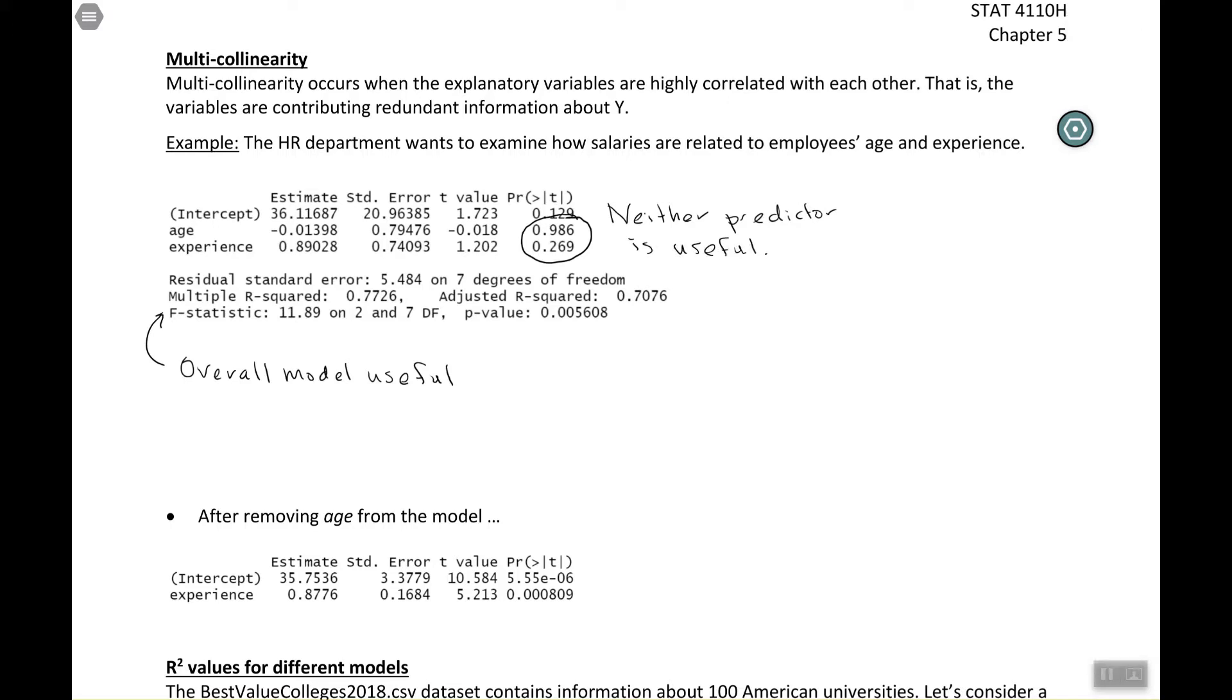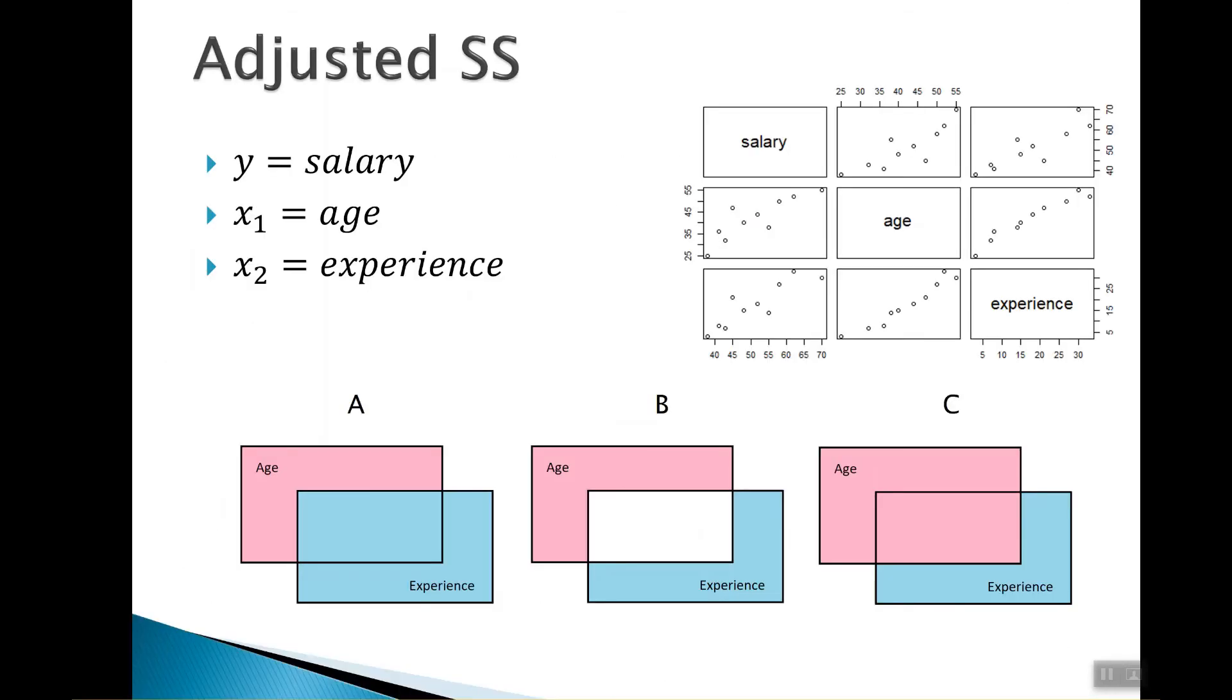So you may have thought of this, or you may have just sort of looked above and see what multicollinearity is about. But basically, this happens when you have variables that are contributing redundant information. So here we have age and experience, and those are going to give us some redundant information. Let's look at some graphs here.